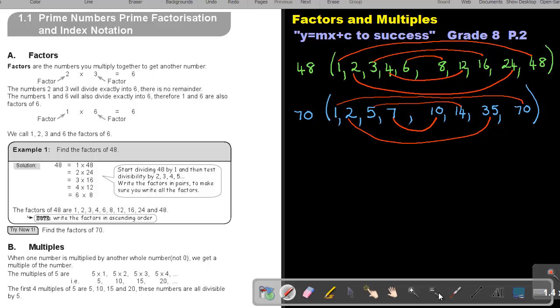When one number is multiplied by another whole number, not 0, we get a multiple of that number. The multiples of 5 are 5, 10, 15, 20. Because 5 times 1 will be 5, 5 times 2 will be 10, 5 times 3 will be 15, 5 times 4 will be 20.